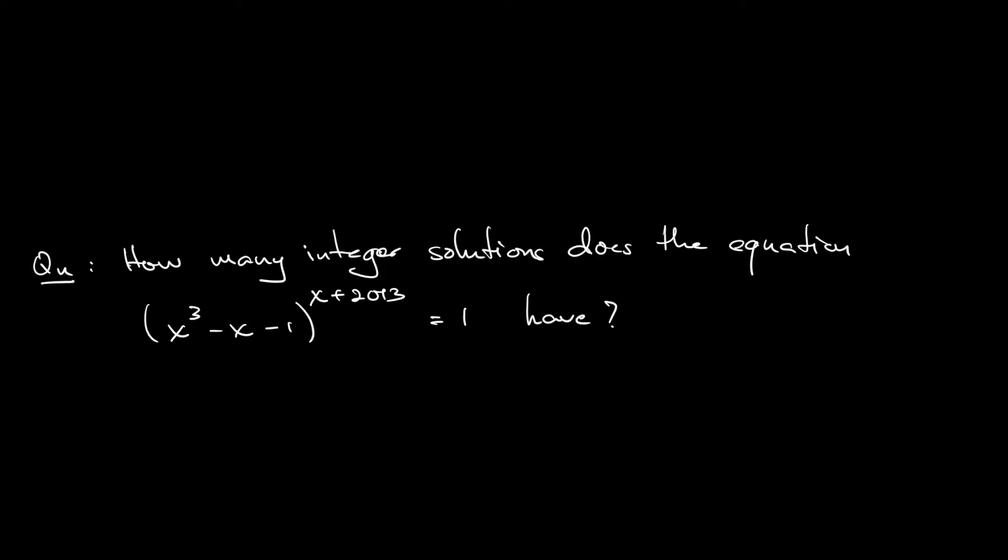This is a number theory problem. So x is an integer. You have an expression of x to the power of an expression of x equal to 1. Notice that for something to the power of something equal to 1, it can be that the power is 0, right? So x plus 2013 is 0, that means x is negative 2013. So this is one root, right?